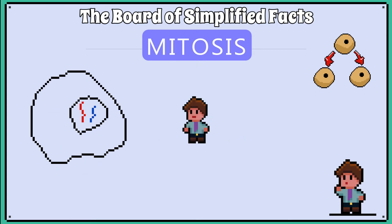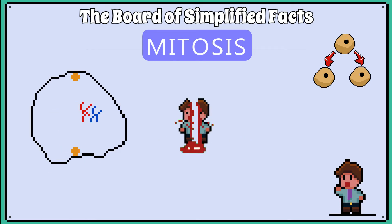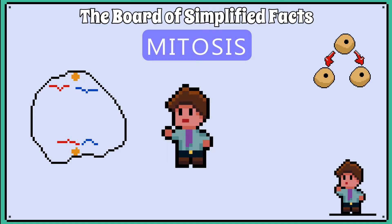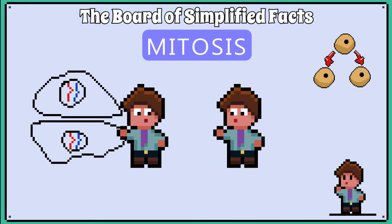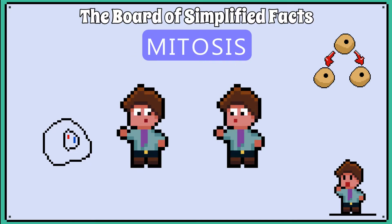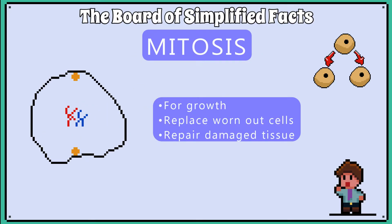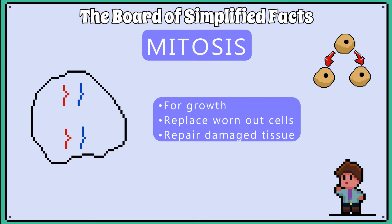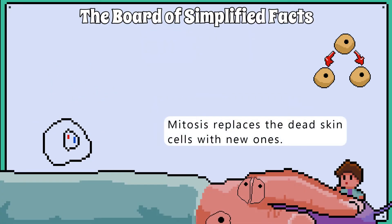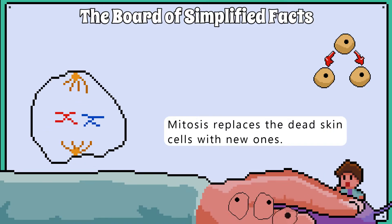Mitosis is the process a cell undergoes when it needs to copy itself and make new cells. Cell division by mitosis enables organisms to grow, replace worn out cells and repair damaged tissues. For example, your skin cells are constantly being rubbed off and replaced with new cells that come from mitosis.